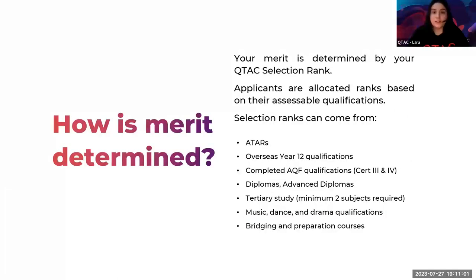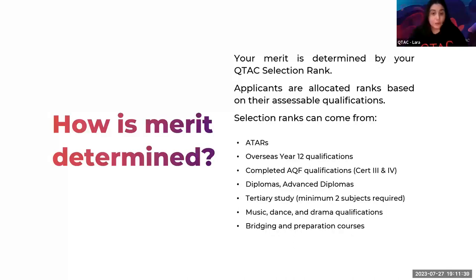How is merit determined? Your merit is determined by your selection rank. Applicants are allocated a rank based on their assessable qualifications. Some ranks can come from ATARs, overseas Year 12 qualifications, completed AQF qualifications such as Certificate 3 and 4, diplomas, advanced diplomas, or tertiary study — a bachelor's degree in a minimum of at least two subjects. We also have music, dance and drama qualifications and bridging and prep courses.